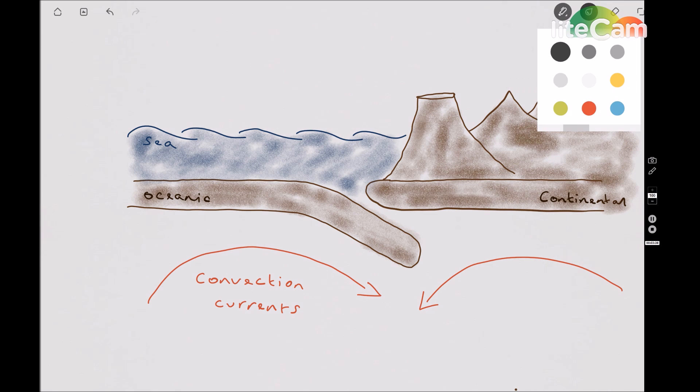On the border between the oceanic and the continental plate, you get this little indentation, the deep section in the sea that we call a trench.